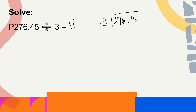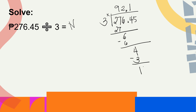We don't need to move the decimal point since the divisor is 3. Let us divide: 27 divided by 3 equals 9; 9 times 3 equals 27. Bring down 6; 6 divided by 3 equals 2; 2 times 3 equals 6; 6 minus 6 equals 0. Bring down 4 — don't forget to write the decimal point. 4 divided by 3 equals 1; 1 times 3 equals 3; 4 minus 3 equals 1. Bring down 5; 15 divided by 3 equals 5; 5 times 3 equals 15; 15 minus 15 equals 0. The answer is 92 pesos and 15 centavos — that is each girl's share.